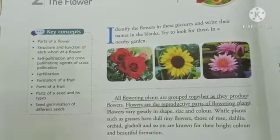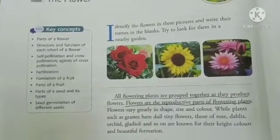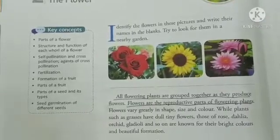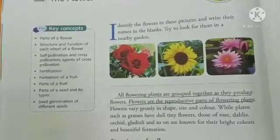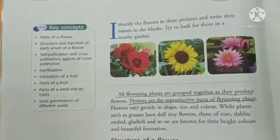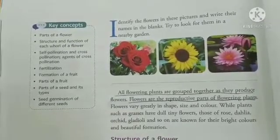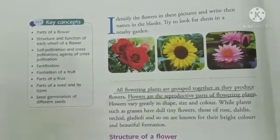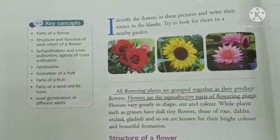If we look at the flowers of plants like grasses, we will find they have very small, that is tiny and dull flowers. Whereas if we look at the flowers of rose and dahlia, we will find them very bright in color and they are also known for their beautiful formation.